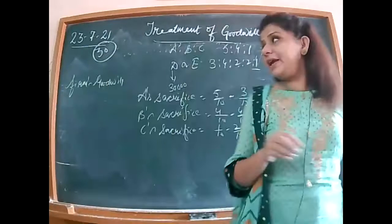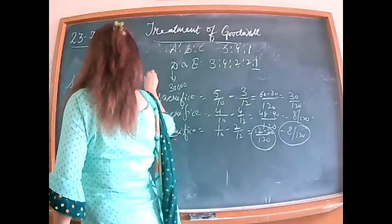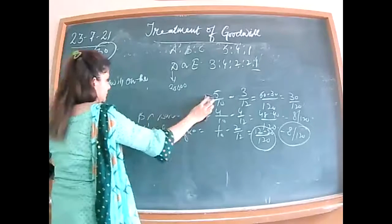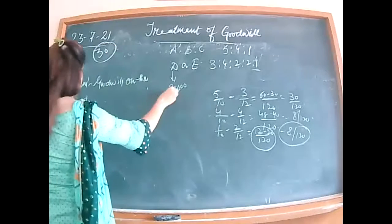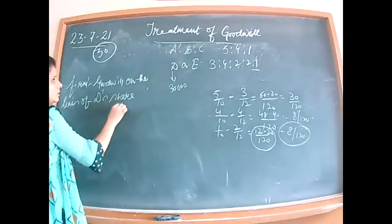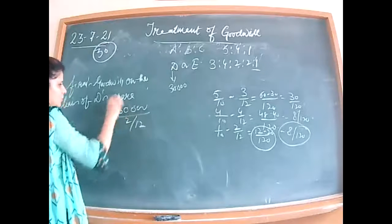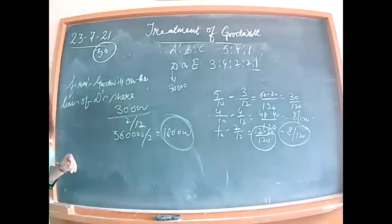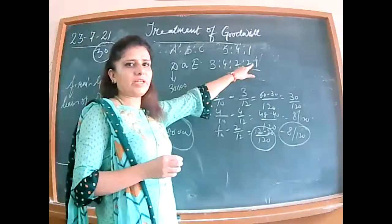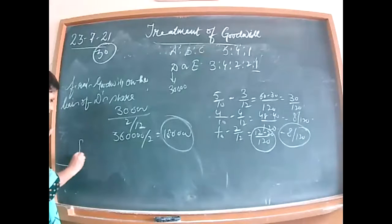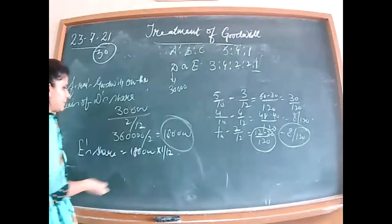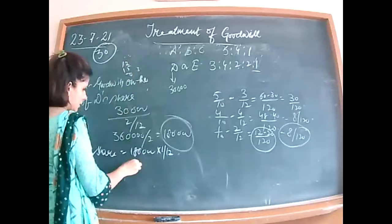D's share of goodwill is 2/12 and he brings 30,000. To find firm's total goodwill: 30,000 divided by 2/12 = 30,000 multiplied by 12/2 = 180,000. Firm's goodwill is 1,80,000. Verified with book. E's share of goodwill = 1,80,000 into 1/12 = 15,000. E is not bringing it.